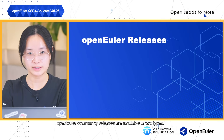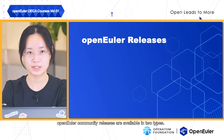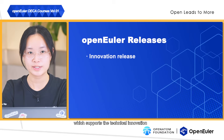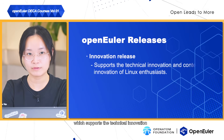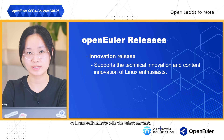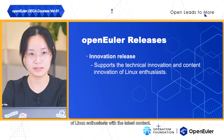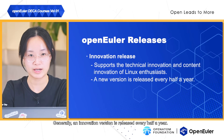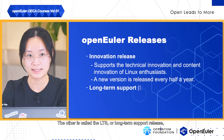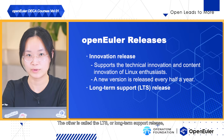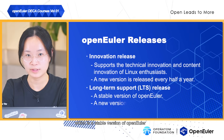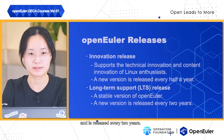OpenEuler community releases are available in two types. One is the innovation release, which supports the technical innovation of Linux with the latest content. Generally, an innovation version is released every half a year. The other is called the LTS, or long-term support release, which is a stable version of OpenEuler and is released every two years.